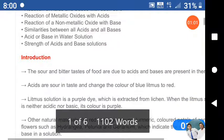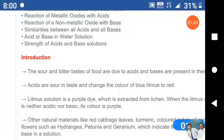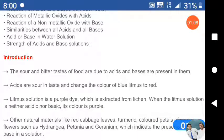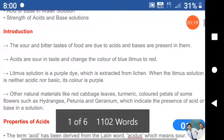Introduction. The sour and bitter taste of food are due to acid and base present in them. Acids are sour in taste and change the color of blue litmus to red.